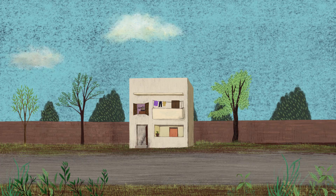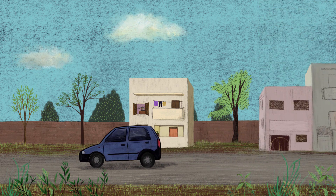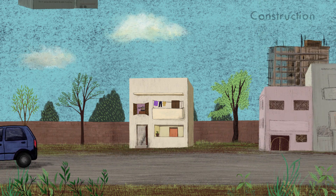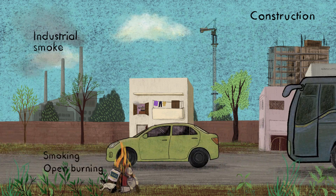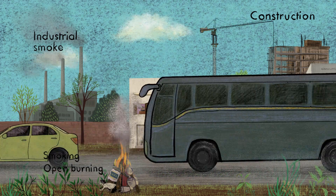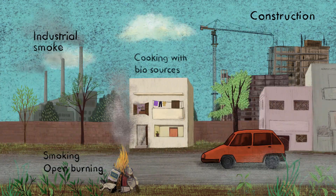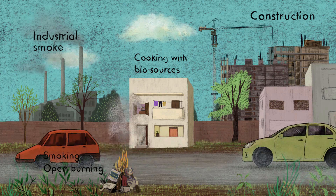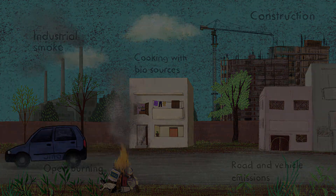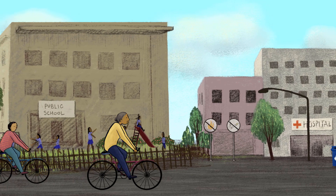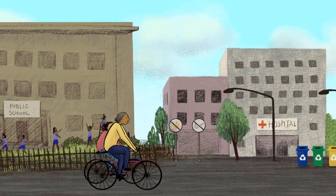What causes urban air pollution? Sources include construction, industrial smoke, smoking, open burning, cooking with wood or other bio sources, and road and vehicle emissions. The good news is that we can make big changes to our air quality.